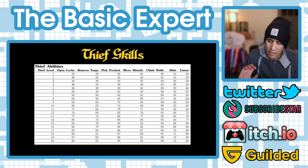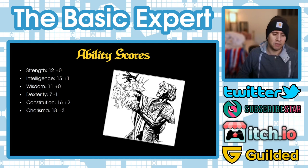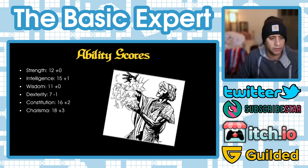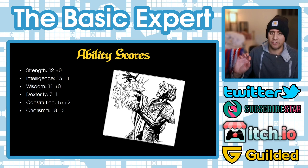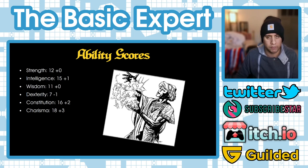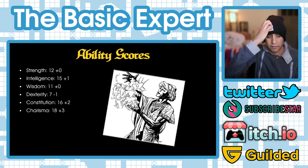Let's generate our character. The ability scores I rolled are: strength 12 (plus zero), intelligence 15 (plus one), wisdom 11 (plus zero), dexterity 7 (minus one), constitution 16 (plus two), and charisma 18 (plus three). These were determined with 4d6 drop the lowest. I didn't need to swap any scores because I wanted to make an elven magic user and these spread out well for that.